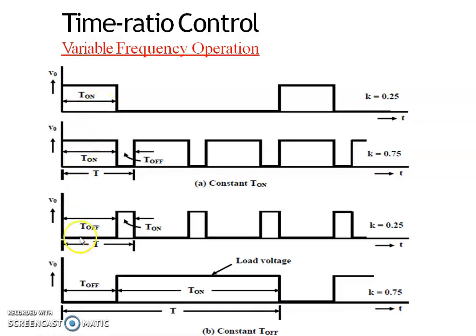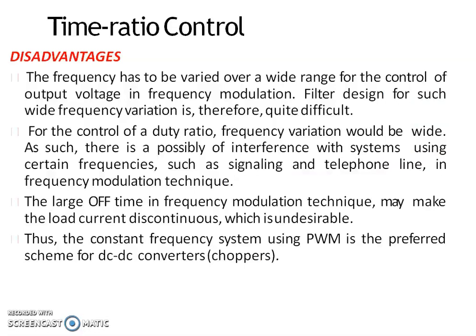In variable frequency control, we keep either the on time constant or the off time constant while varying the total chopping frequency. This type of control is also known as a frequency modulation scheme. Thus we can obtain variable average output voltage from a chopper. In summary, Time Ratio Control involves varying the duty cycle and is of two types: constant frequency control and variable frequency control.